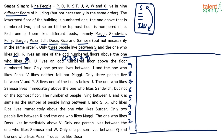So possibilities for R are 3, 5, 7, or 9, and R comes above idli. U lives on an odd-numbered floor above floor number four. Odd-numbered floors above four are 5, 7, and 9 — that gives three possibilities. U can be on the 5th, 7th, or 9th floor.